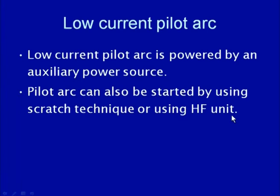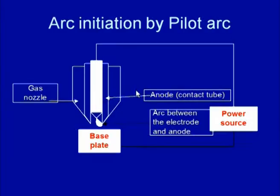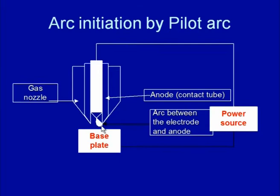Whether using the HF unit or the touch start method, a very low current is supplied at the beginning so that whatever arc is generated at the time of contact is of very low heat. In the case of arc initiation by the pilot arc, high frequency pulses of high voltage and low current help establish the arc between the tungsten electrode and the nozzle.